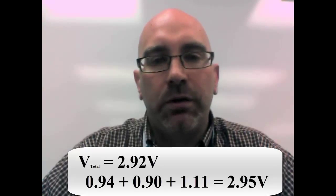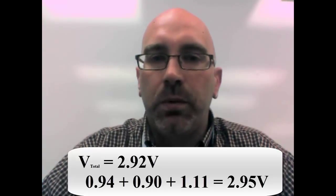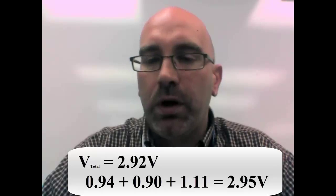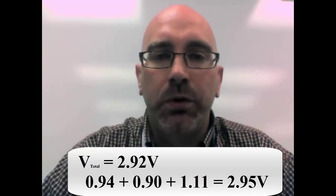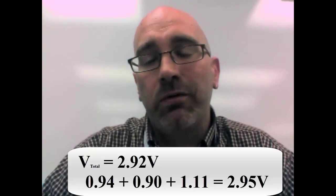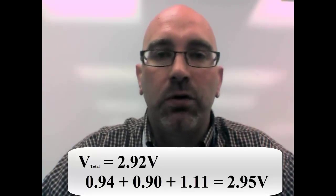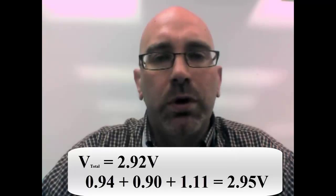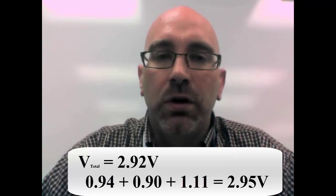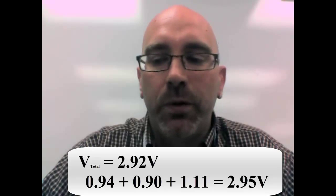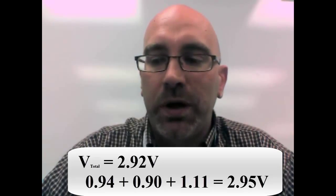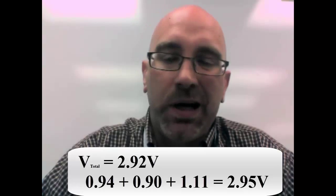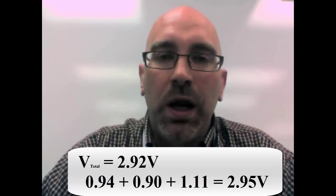Now, hopefully this makes sense. We've seen that light bulb 1 consumed 0.94 volts, light bulb 2 consumed 0.9 volts, and light bulb 3 consumed 1.11 volts. But the rule is that in a series circuit, you add up the power consumption of each one of the components. Now, we know that the battery was able to supply about 2.95 volts, and it follows.